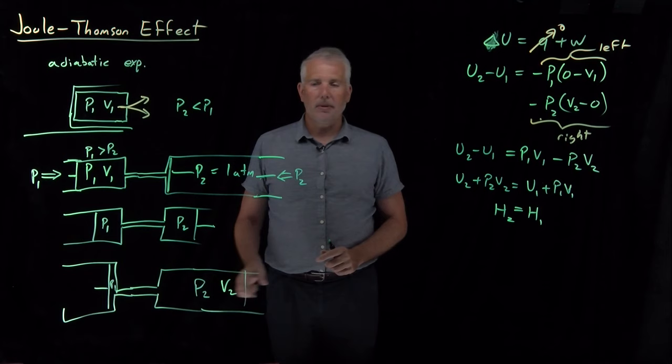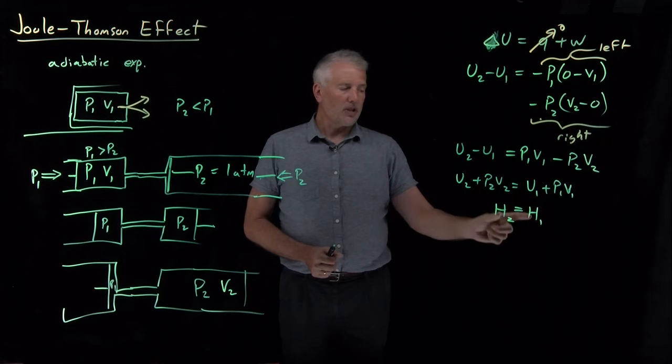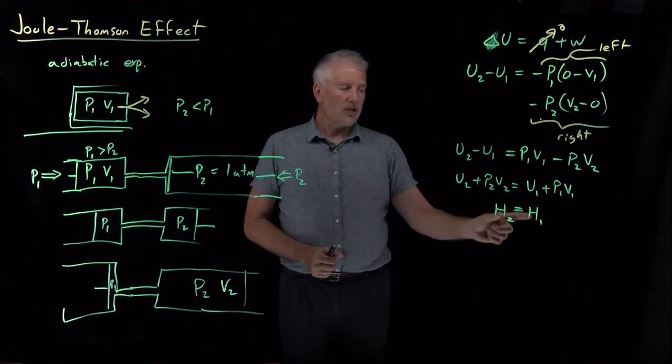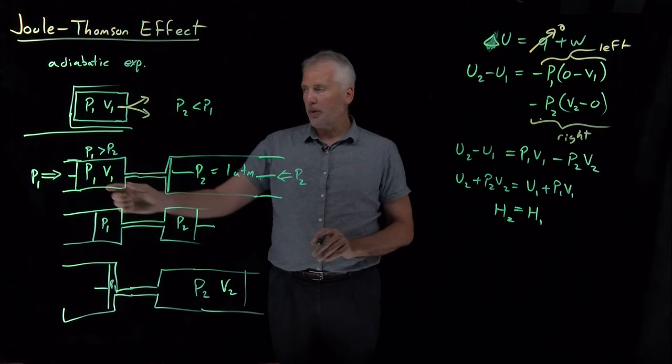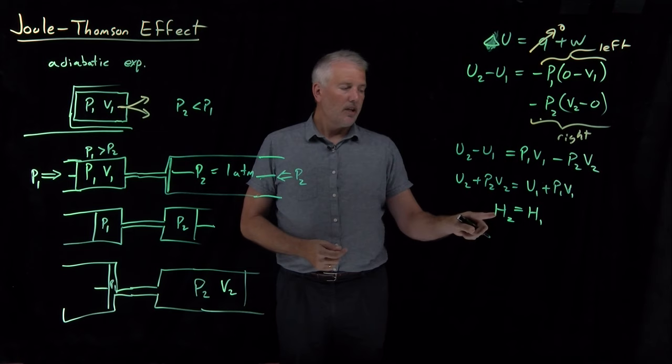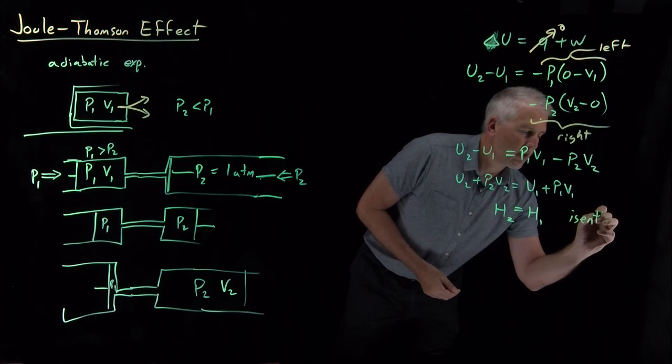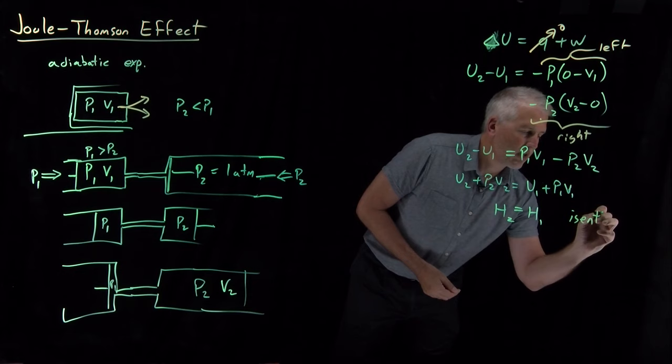And that's sort of the point of enthalpy, remember, is to allow us to not have to worry too much about the PV work. So what we've just found is that this process, this not perfectly adiabatic expansion, but this forced compression and then expansion of a gas under adiabatic conditions turns out to not change the enthalpy. So that's yet another type of process that we can give a name to. A process that doesn't have a change in the enthalpy is called an isenthalpic process, like isoenthalpic process.